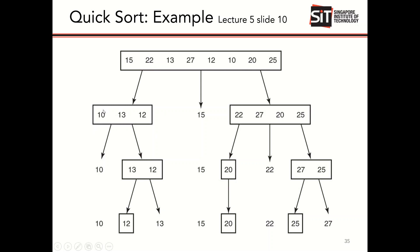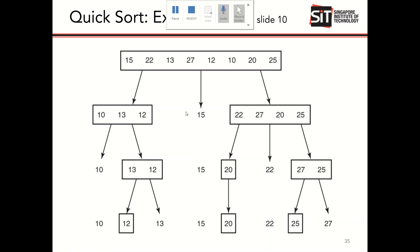At the next level, the first element 10 is chosen as the pivot again. Since 10 happens to be the smallest number, there is nothing on the left side, and 12 and 13 go to the right. Then 13 is chosen as the pivot, so 12 goes to the left. Similarly, 22 is the pivot on the right side — 20 is smaller so it goes left, and 25 and 27 go right. With 27 as the pivot, 25 goes to the left. This completes the dividing phase.